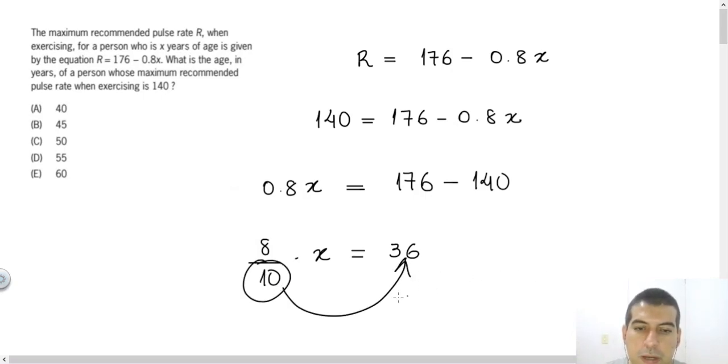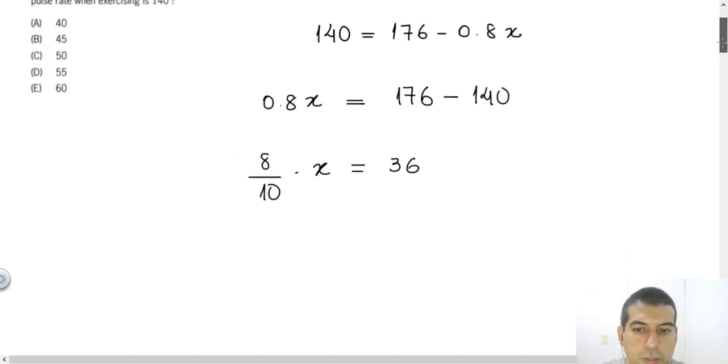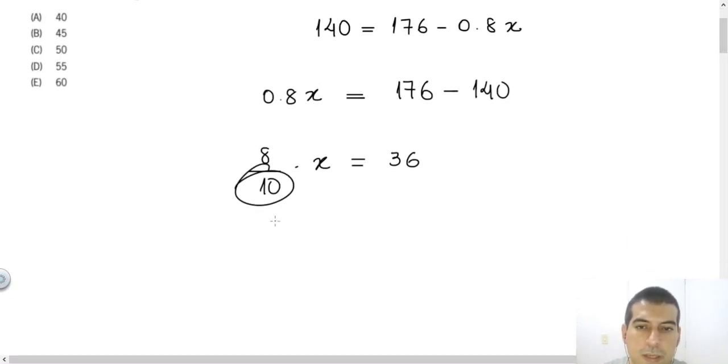I changed the form of the number from decimal to a fraction in order to be easy to just send this 10 to the right side. This 10 is dividing, so if I send to the right side, it will do the opposite. The opposite of division is multiplication. So the 10 will multiply 36. You just write 36 and include one more 0, because that's what you do when you multiply by 10.